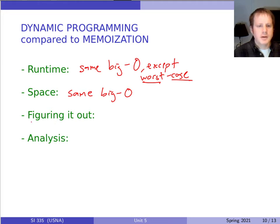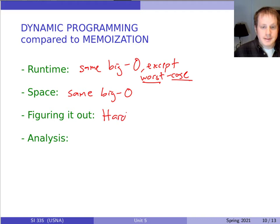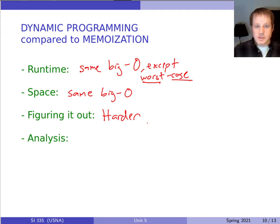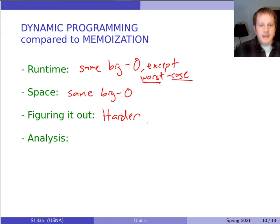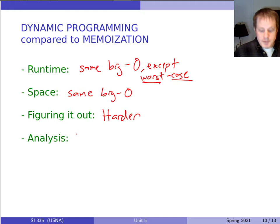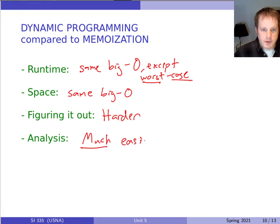How hard is it to come up with the dynamic programming solution? I would say it's usually harder than memoization. For memoization, we just need a recursive algorithm and let the table lookups do the rest of the work. Memoization is usually easier to come up with once you get the recursive structure of the problem. Dynamic programming is kind of when we actually understand how the memoization is working, then we can have this simpler direct method to build up the table. But one of the big advantages with dynamic programming is that the analysis is much easier.